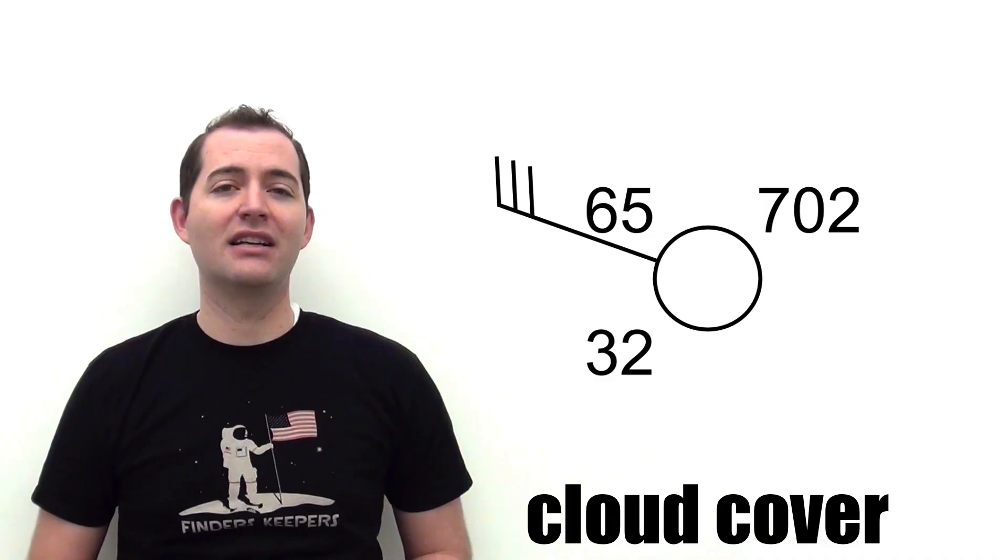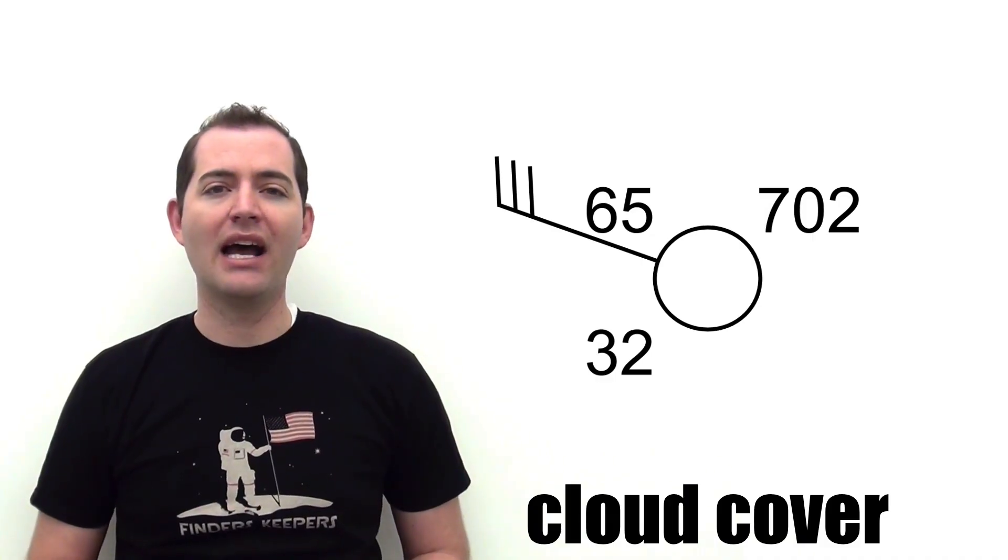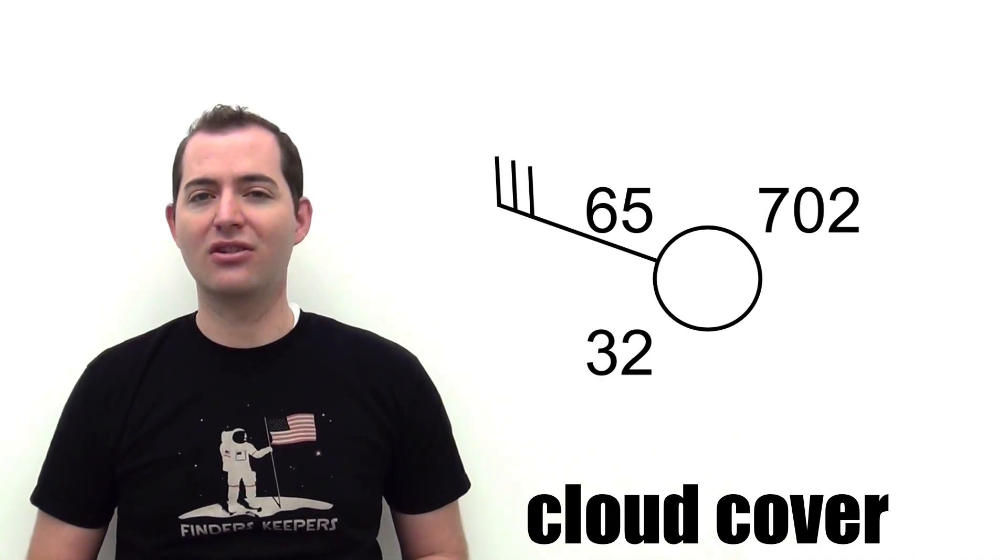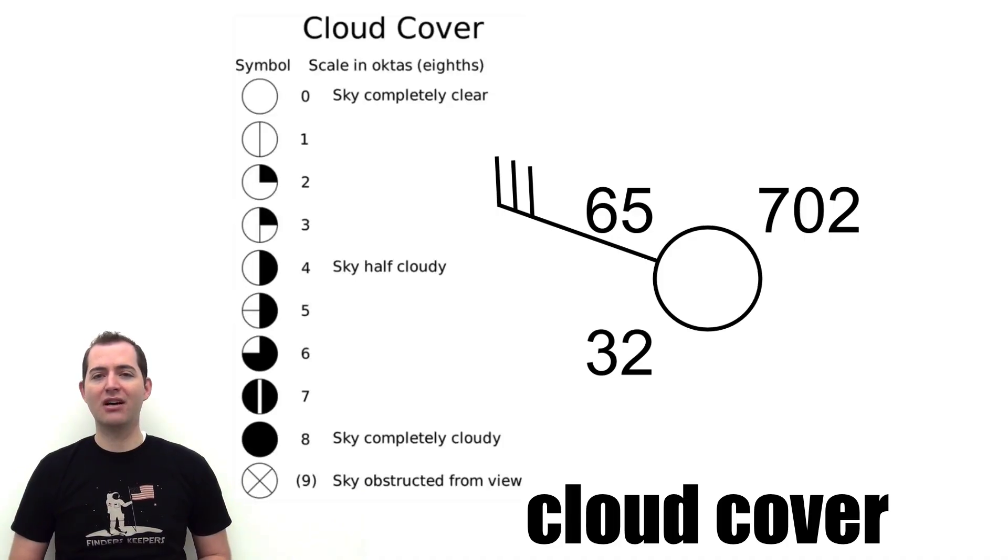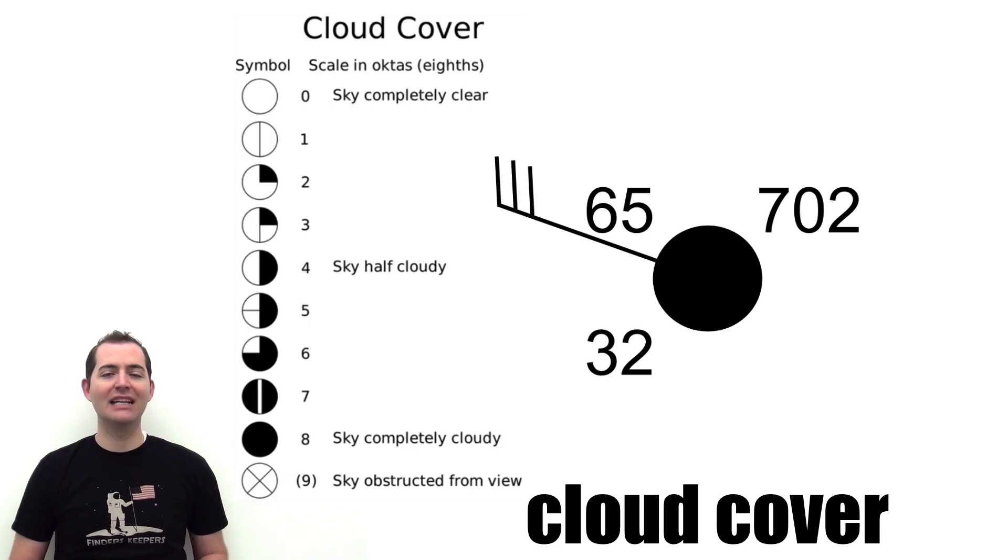Cloud cover is also represented on a station model by how filled in the station circle is. For example, a completely open circle represents no cloud coverage, a half-full circle represents 5/10 cloud coverage, and an entirely filled circle represents full cloud coverage.